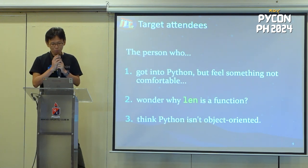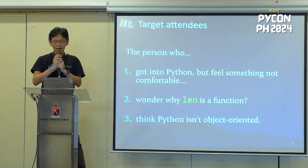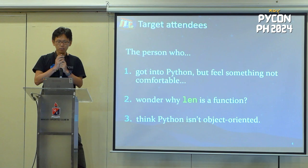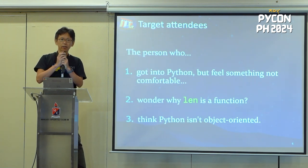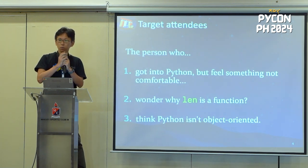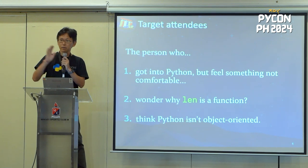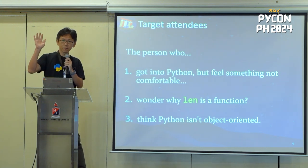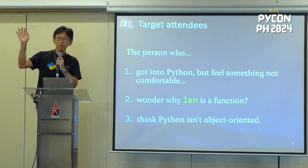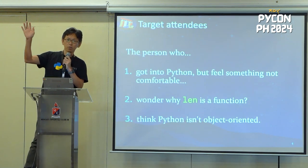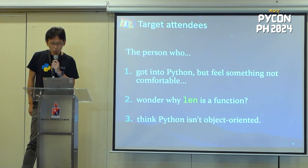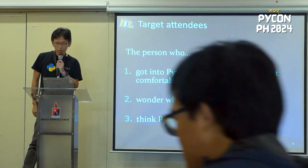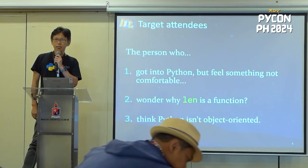Who wondered why length is a function, not a method or property like `.length`? Two or three? And who thinks Python isn't object-oriented?